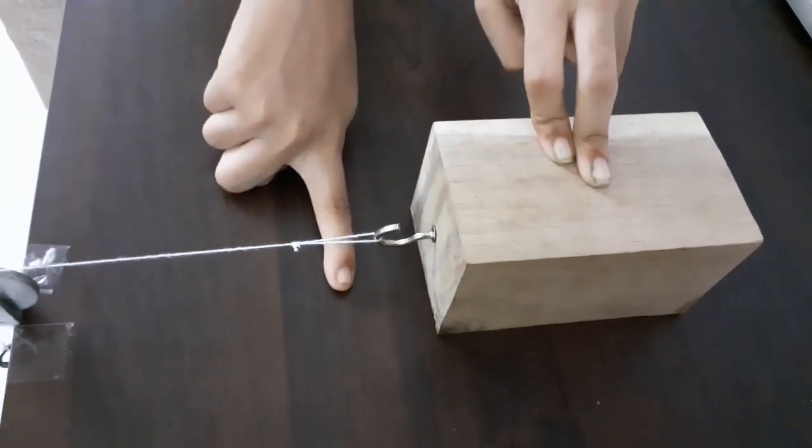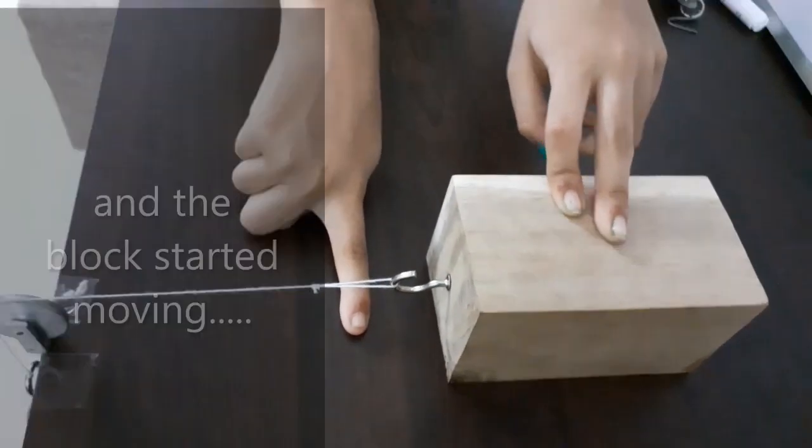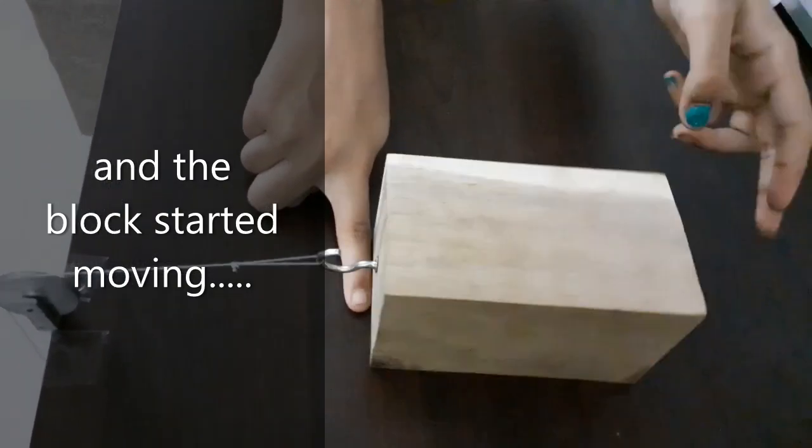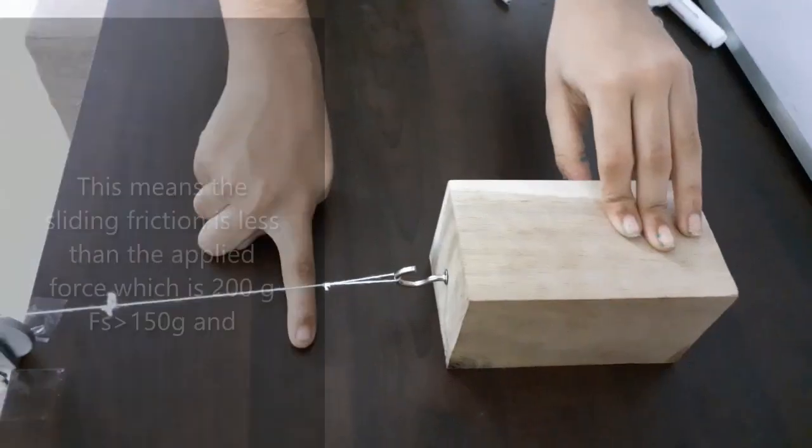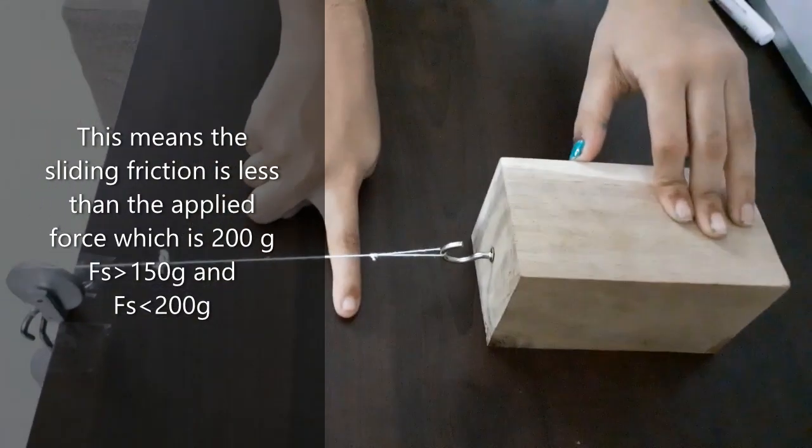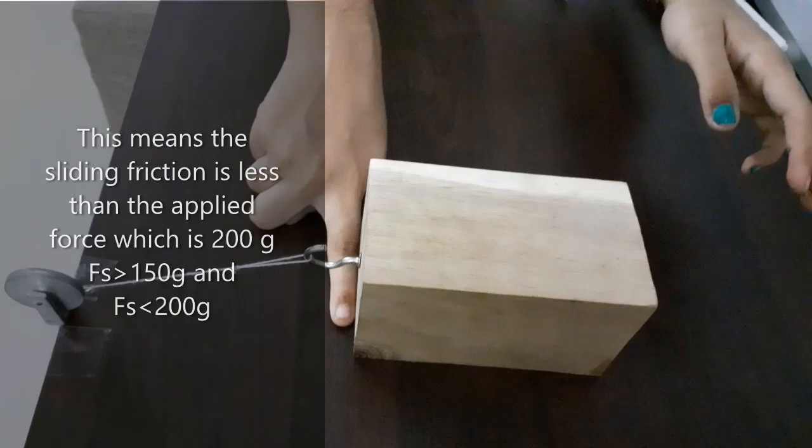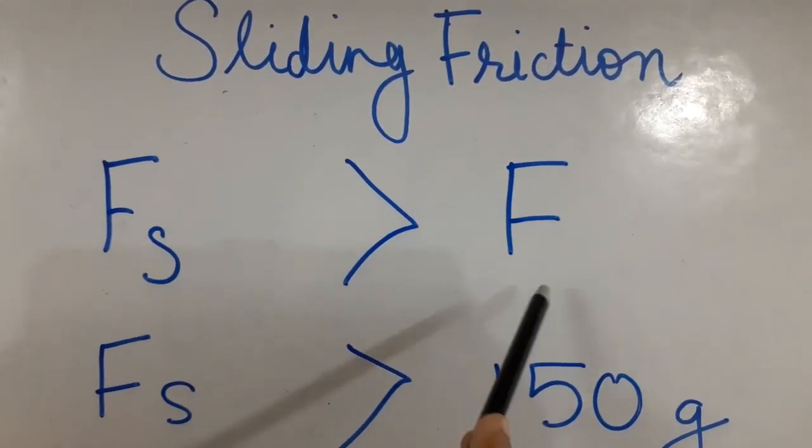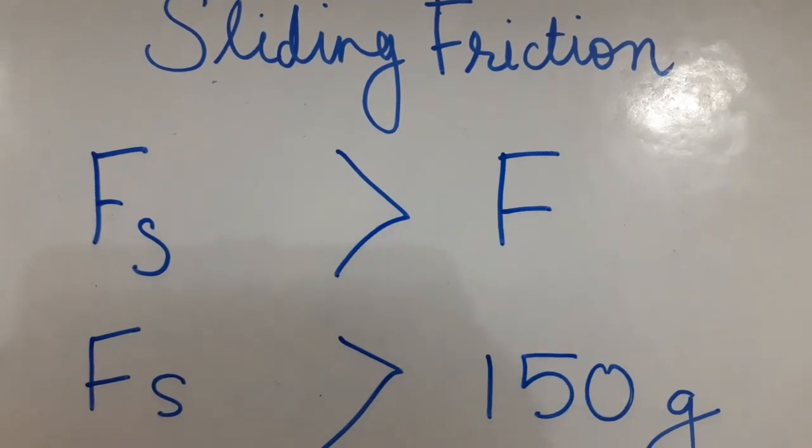I have held the block purposefully just to explain. If the applied force is more than the frictional force, the block will move. This means that the sliding friction is more than the applied force, which is 150 gram.